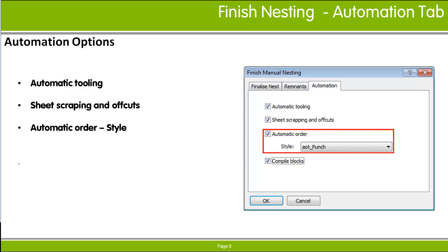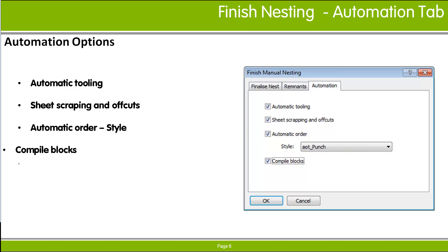The Automatic Order option generates an order program for the current nest automatically using the AutoOrder text defined by the style file selected from the pull-down list. Any order text already defined for the nest will be replaced. The Compile Blocks option runs the block compiler for the current nest and the NC block saved in the current nest drawing.